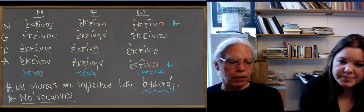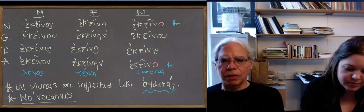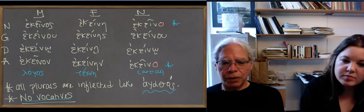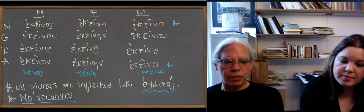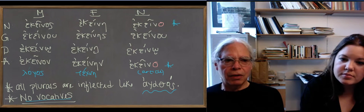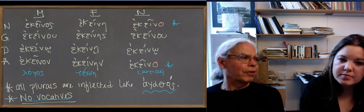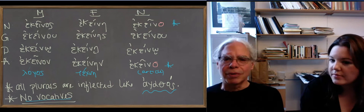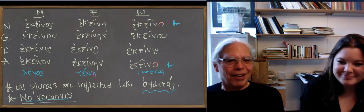Notice that there are no vocatives. This makes sense if you understand that these pronouns work in correspondence to the persons of the verb. So you can't address a thing that belongs to somebody else in the second person. All right? That's it.